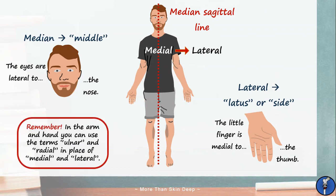One last thing to note is that in the hand and arm, we can use the terms ulnar and radial to mean the same thing as medial and lateral.